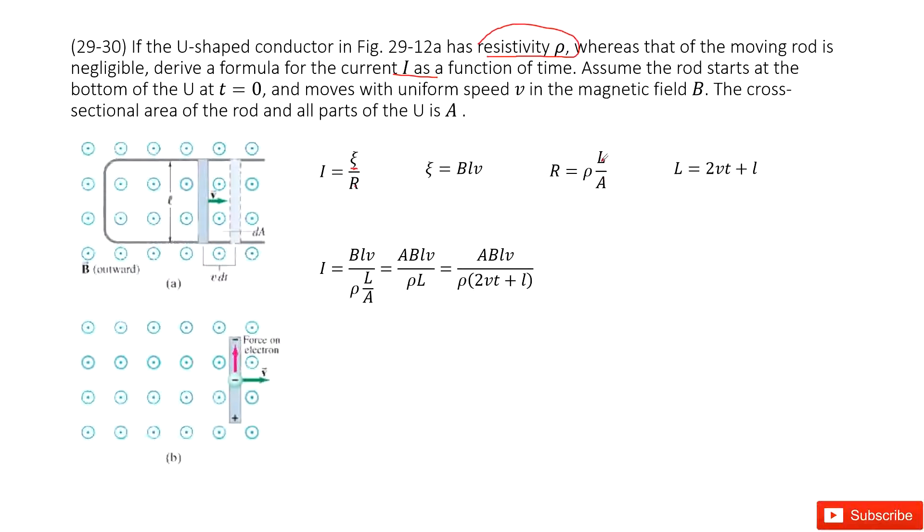So this L is what? This L is the length for this loop. So the length for the loop we can see is 2VT plus L.